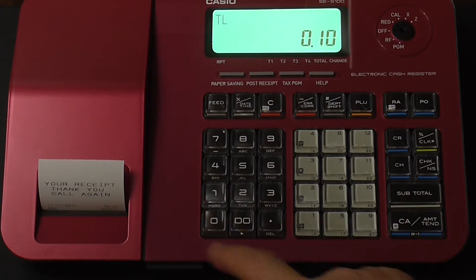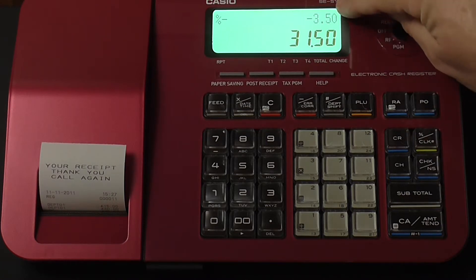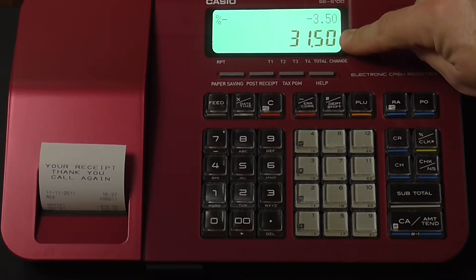If you just enter 10 for 10%, then press the percentage button. It comes up there minus £3.50 and then brings the balance down to £31.50.